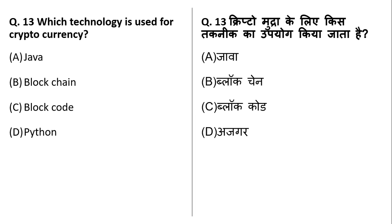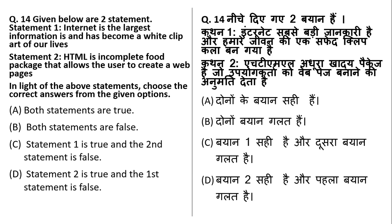Which technology is used for cryptocurrency? Cryptocurrency, like Bitcoin, is digital money. All cryptocurrency uses blockchain technology. So in this question, B is the right answer.